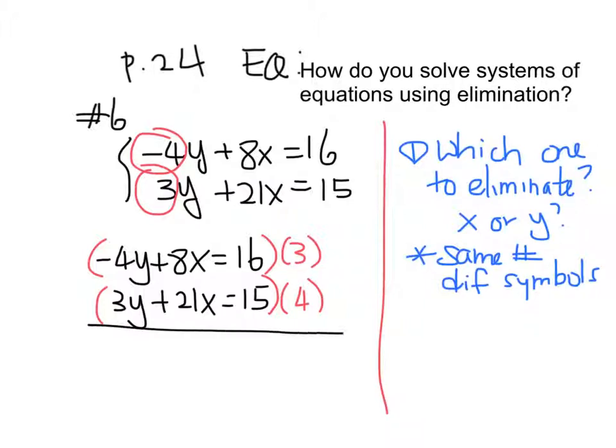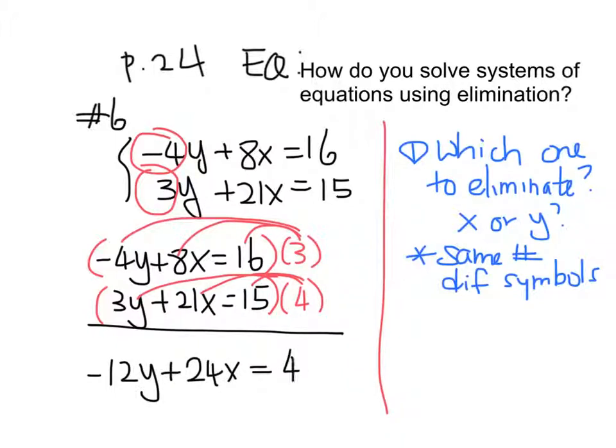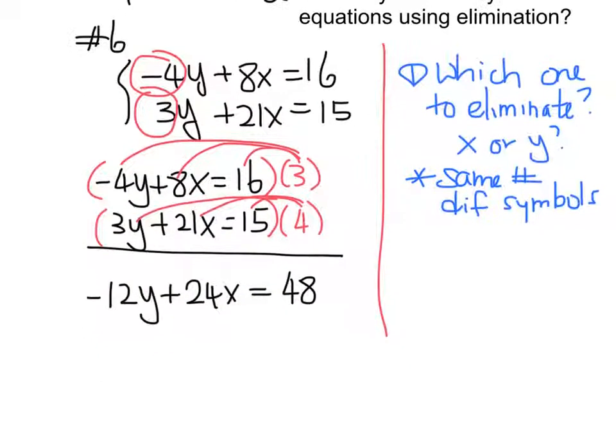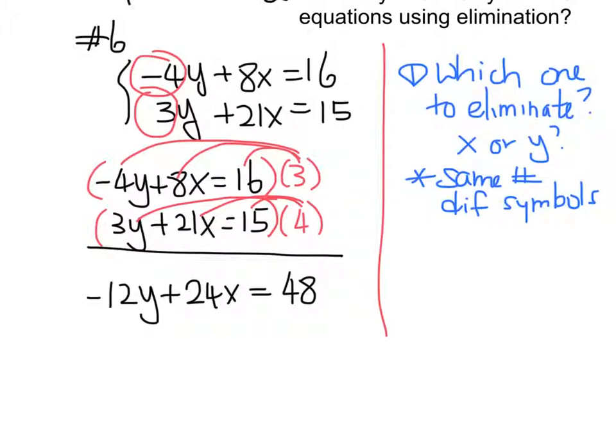Because the negative 4 times 3 is negative 12, and the 3 times 4 is positive 12. But I can't just multiply to the front number. I got to multiply to everything. So let's make sure we do this. So I'm going to go ahead and distribute everything. The 3 to the 16, the 8x, and the negative 4y. Same thing with the 4. 15, 21, and the 3y. So let's go. Negative 12y plus 24x equals 48. And then we're also going to have 12y plus 84x, and that equals 60.